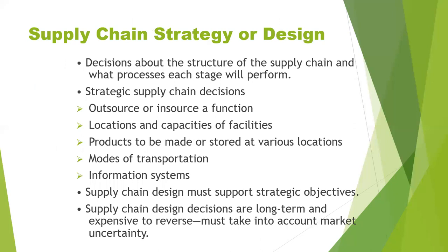Now let us see about the first phase in detail: Supply Chain Strategy or Design. During this phase, a company decides how to structure the supply chain over the next several years. It decides what the chain's configuration will be, how the resources will be allocated, and what processes each stage will perform. The strategic decisions include whether to outsource or perform a supply chain function in-house, the location and capacities of production and warehousing facilities, the products to be manufactured or stored at various locations, the modes of transportation to be made available, and the type of information system to be utilized. A firm must ensure that the supply chain configuration supports its strategic objectives and increases the supply chain surplus during this phase.